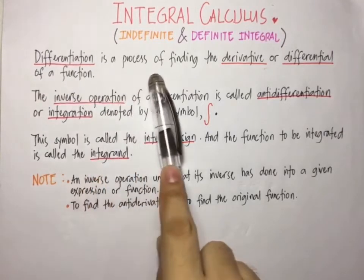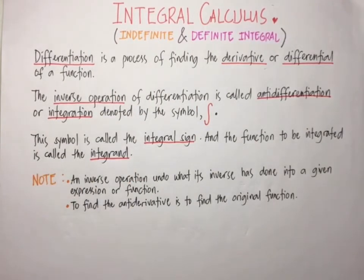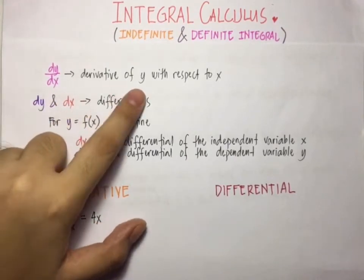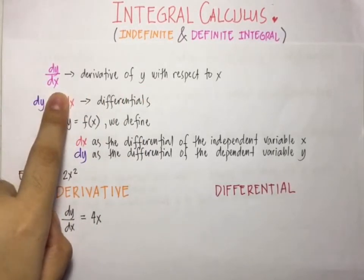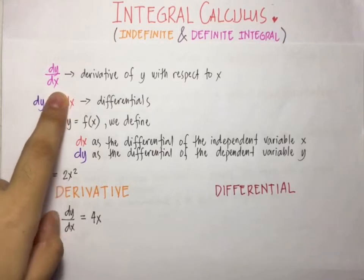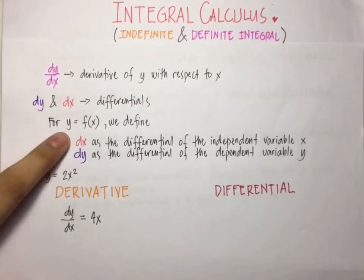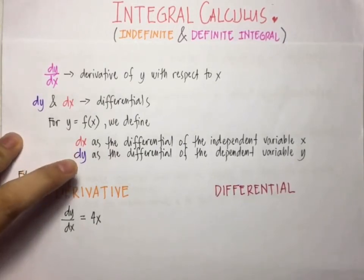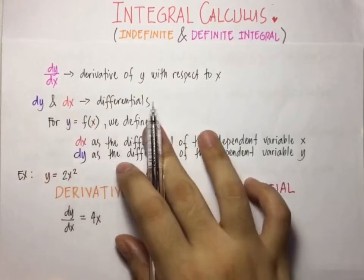Differentiation is a process of finding the derivative or differential of a function. Let's illustrate the difference between derivative and differential. We have used dy over dx to indicate the derivative of y with respect to x, and treated dy over dx as a single symbol and not as the ratio of dy and dx. Now we're going to define dy and dx. For y equals f of x, we define dx as the differential of the independent variable x, and dy as the differential of the dependent variable y. These symbols are called differentials.